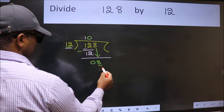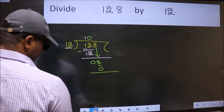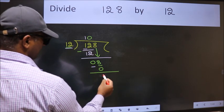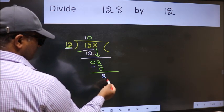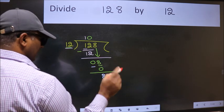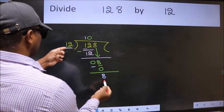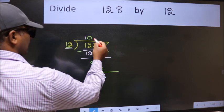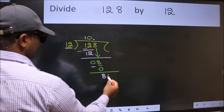So 12 into 0. Now we subtract. We get 8. Over here, we did not bring any number down, and 8 is smaller than 12. So now we can put dot and take 0.